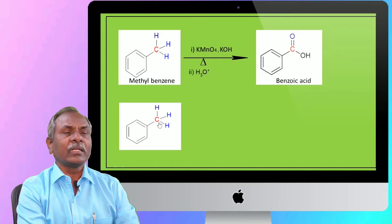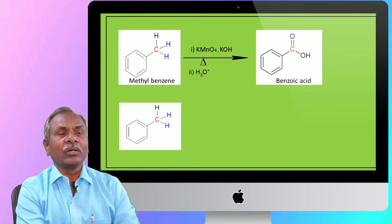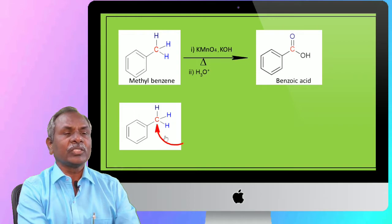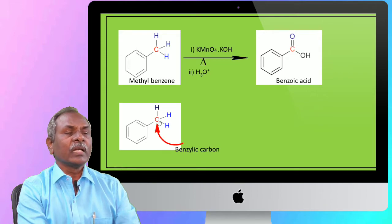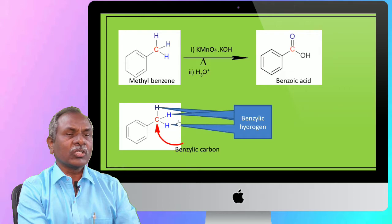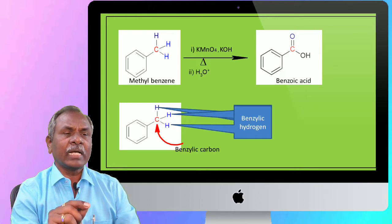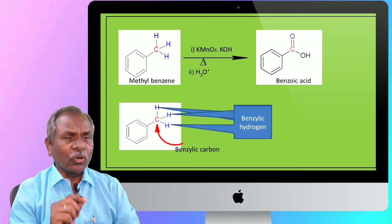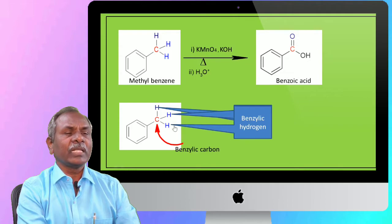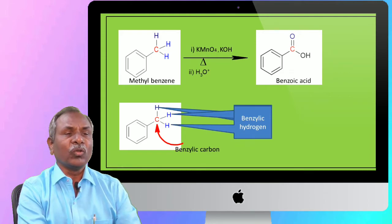The aromatic ring has an alkyl group — the alkyl chain which is outside the benzene ring. This carbon is known as the benzylic carbon, and the hydrogens attached to the benzylic carbon are called benzylic hydrogens. These benzylic hydrogens are susceptible to this oxidation reaction.